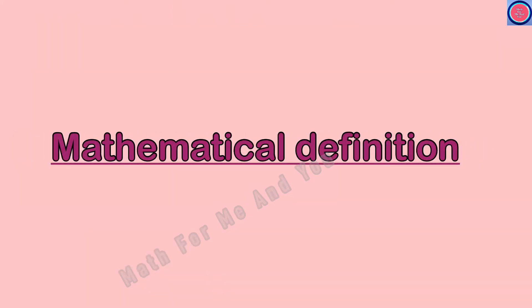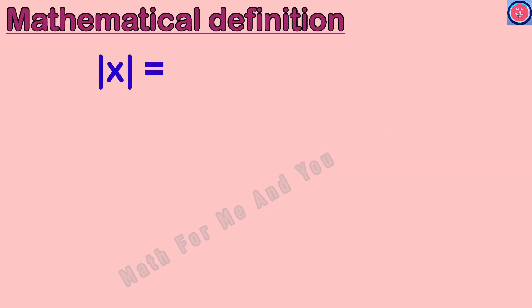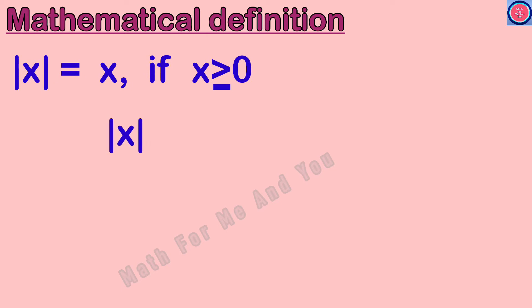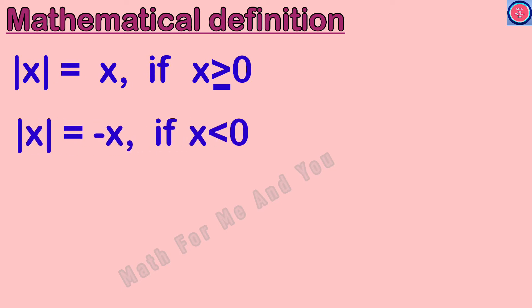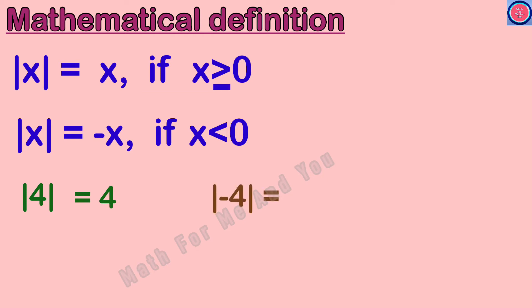Let's see the mathematical definition of absolute value: absolute value of x equals x if x is greater than or equal to 0, and absolute value of x equals minus x if x is less than 0. Using this definition, what is absolute value of 4? Since 4 is greater than 0, its value is equal to the same number: 4.